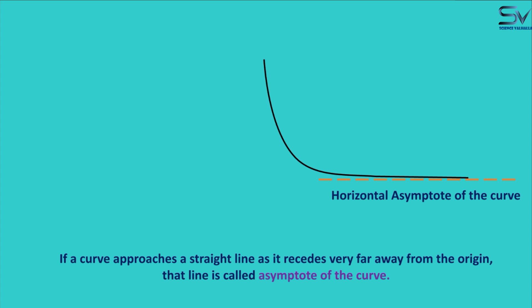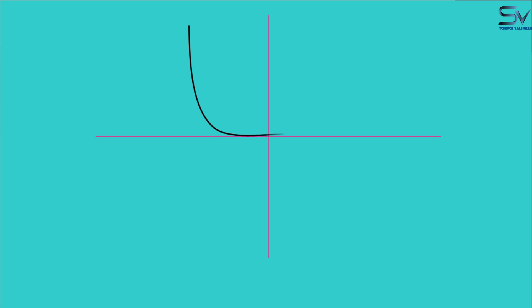What will be the equation of this line? Showing both axes again, we see that the horizontal asymptote is exactly above the x-axis. So the equation of the x-axis line will be the same for this horizontal asymptote. Similarly, there are also vertical asymptotes and other asymptotes. Let's see the vertical asymptote as well.